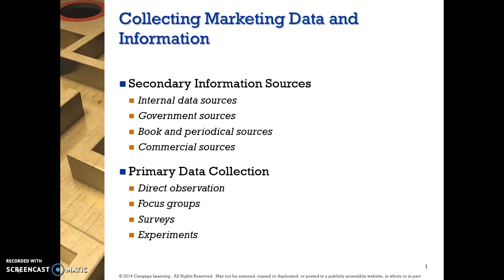As you learned this week, there are two main sources and research options for collecting data. First is secondary and then primary. With secondary, as you can see, there are internal data sources — these are generally past studies, past research that have occurred — government sources such as grants, different studies conducted by the government and other entities, book and periodical sources, and commercial sources.